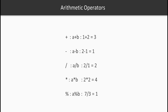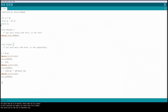The arithmetic operators are plus, minus, division, multiplication, and modulus. For example, 2 plus 1, 2 minus 1, 2 divided by 1. The modulus operator gives the remainder, so 7 modulus 3 is 1.